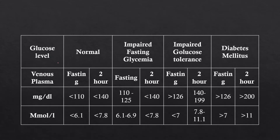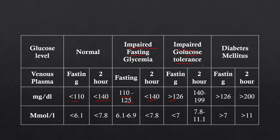There is a table showing normal values and criteria for impaired fasting glycemia and impaired glucose tolerance. Normal fasting glucose should be less than 110 mg/dL, and the 2-hour value should be less than 140 mg/dL. If fasting levels are between 110 and 125, the patient has impaired fasting glycemia. If fasting is more than 126 or the 2-hour value is 140 to 199 mg/dL, the patient has impaired glucose tolerance. If fasting is more than 126 and the 2-hour value is more than 200, the patient has diabetes mellitus.